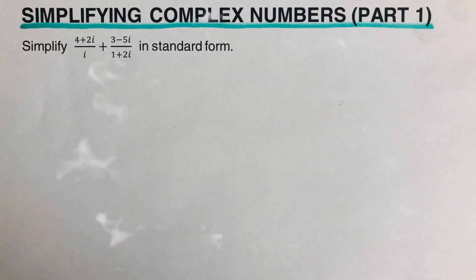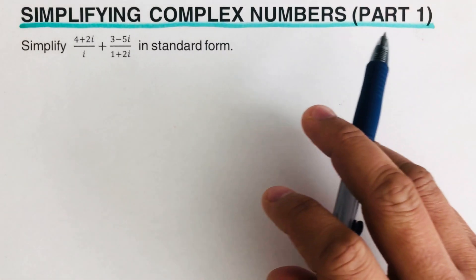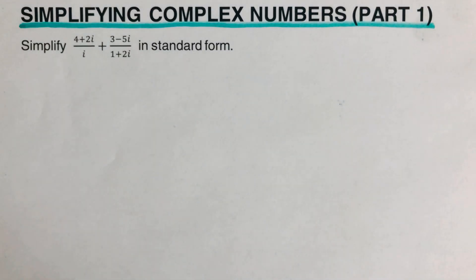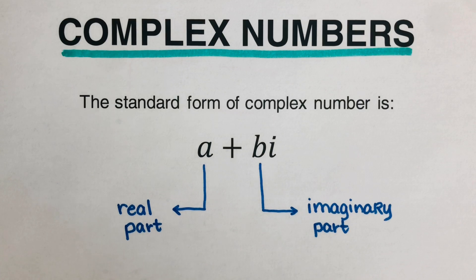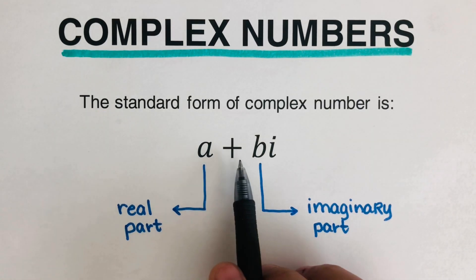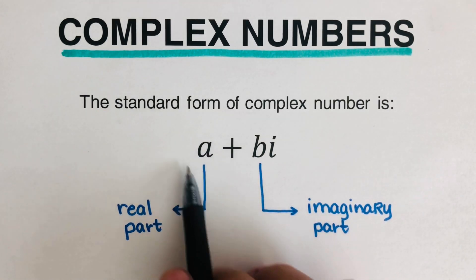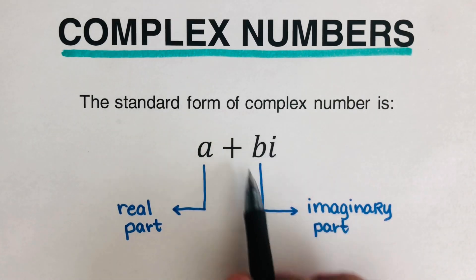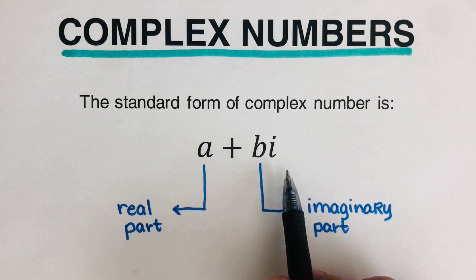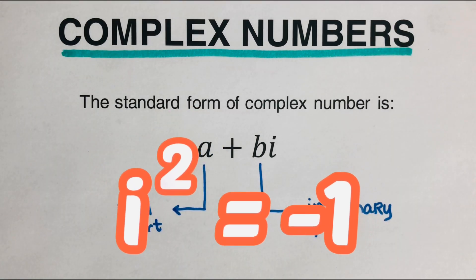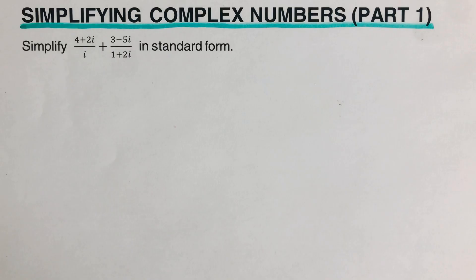Hello everyone. In this video we will simplify complex numbers — this is the first part. Before we jump into the example, let's have a review. Complex numbers are numbers that can be expressed in standard form a plus bi, where a is the real part and bi is the imaginary part. Both a and b are real numbers, and i represents the imaginary unit satisfying i squared equals negative one.